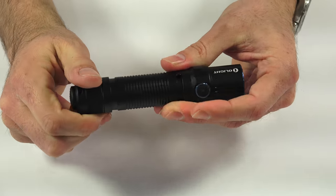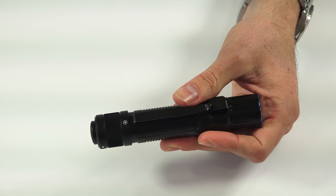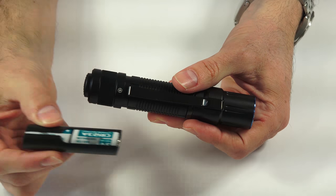And it screws on fairly easily. The plus terminals, as the indicator here shows, go this way on the light. So it's a little bit backwards of how a lot of lights would go with them facing the other way.